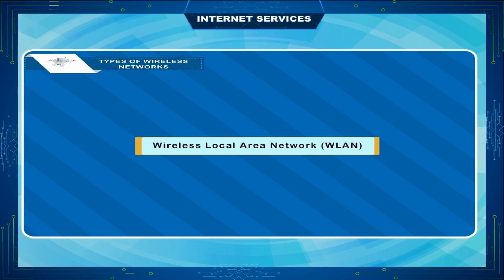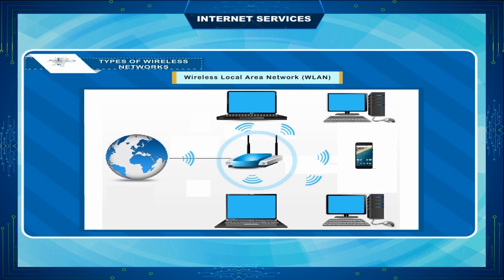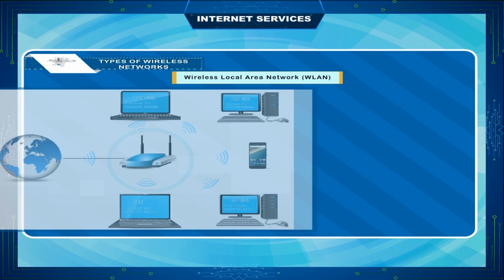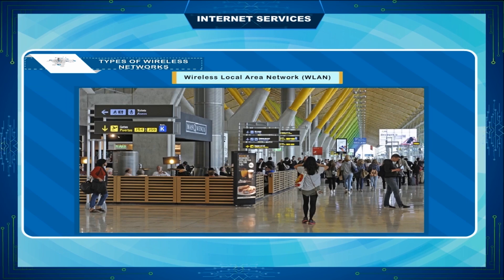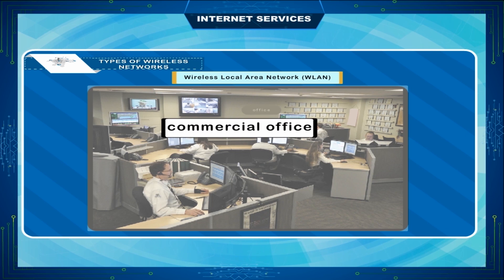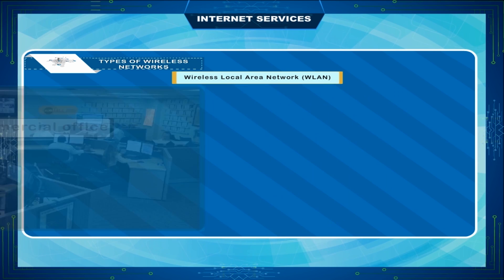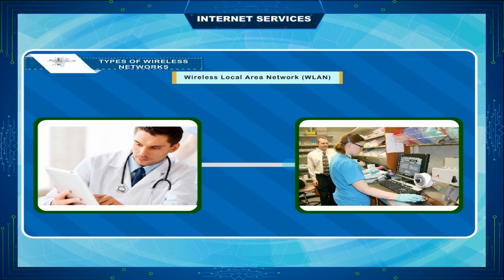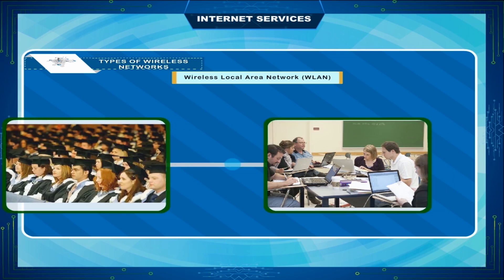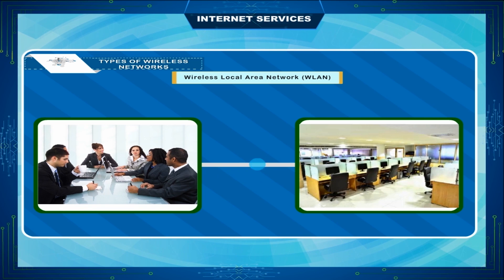Wireless Local Area Network (WLAN): like wired LANs, wireless LANs have a finite coverage area. They wirelessly connect computers in a defined coverage area like a hospital, a university, an airport, or a commercial office. They are designed for a certain set of people — for example, doctors and technicians in a hospital, students and teachers in a university, or office staff in a commercial setup.